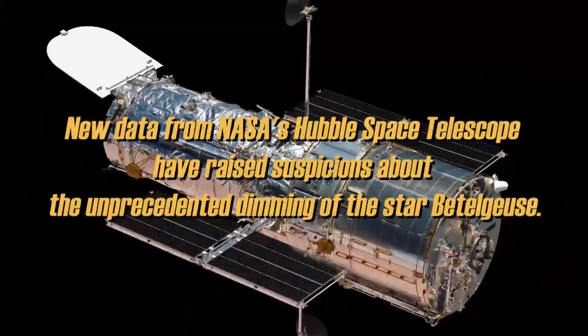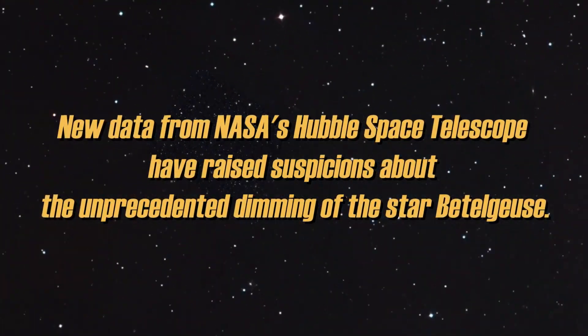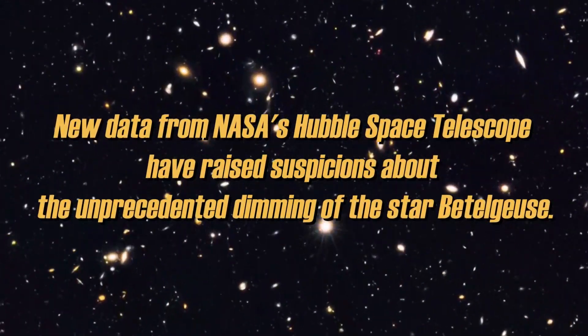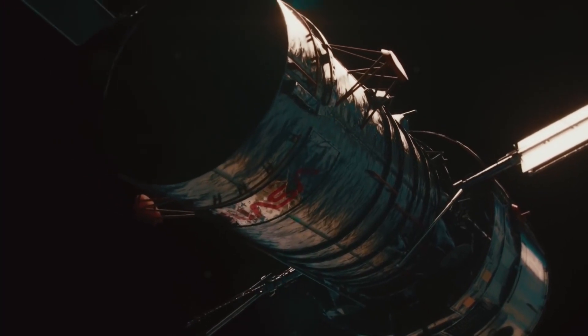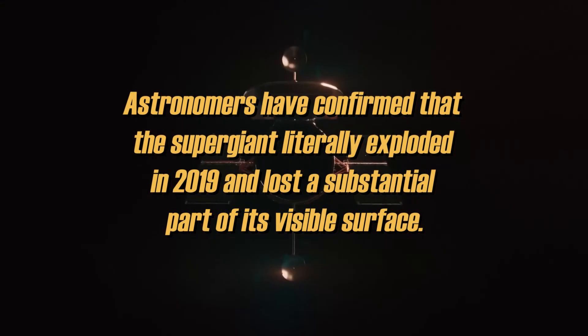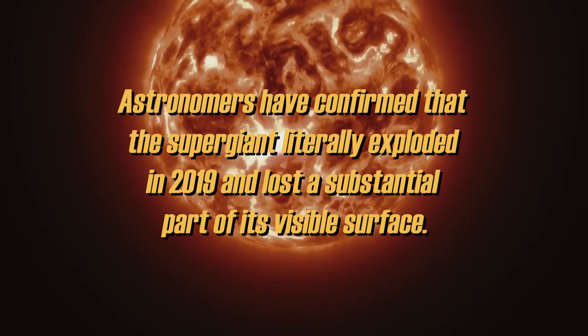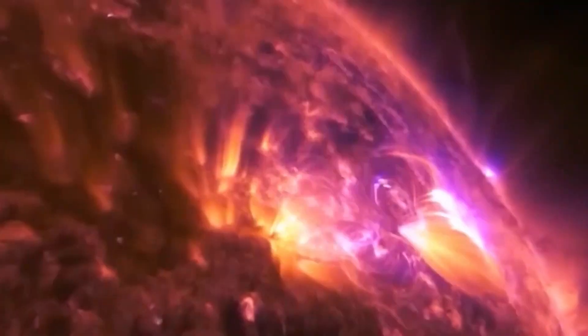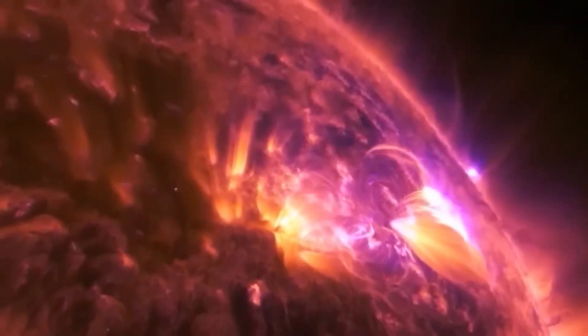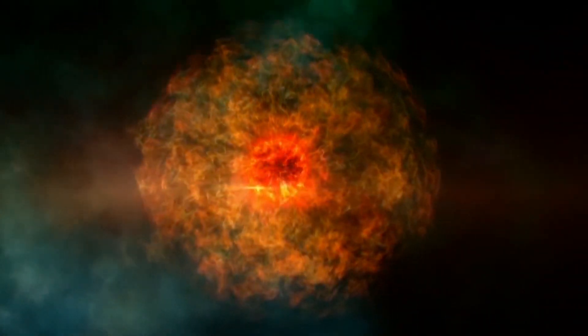New data from NASA's Hubble Space Telescope have raised suspicions about the unprecedented dimming of the star Betelgeuse. After analyzing data from the HST and other observatories, astronomers have confirmed that the supergiant literally exploded in 2019 and lost a substantial part of its visible surface, thus producing a colossal injection of surface mass. This is a unique incident that has never been seen in the behavior of a normal star.